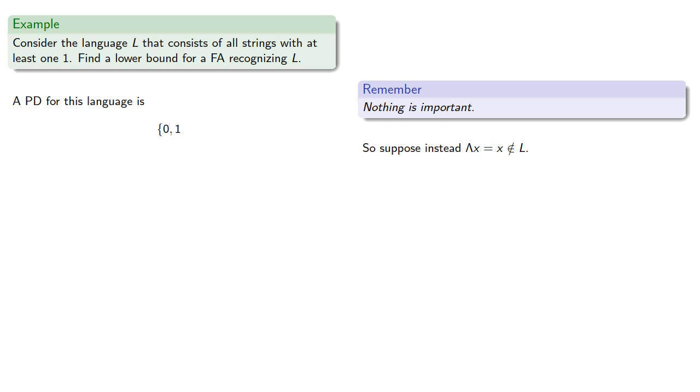So suppose lambda x, which is to say x, is not in L. Then x contains no 1s, and so 0x is not in L. So lambda and 0 are not distinguishable over L, which means we can't add lambda to our pairwise distinguishable set.